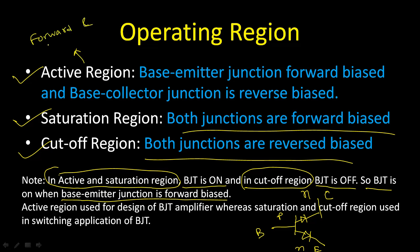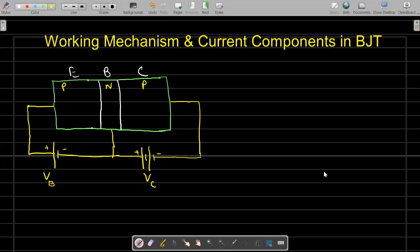Some textbooks mention four operating regions rather than three. In this case, the active region is divided into forward active and reverse active. The region discussed here is forward active. So there are three main operating regions: active, saturation, and cutoff.